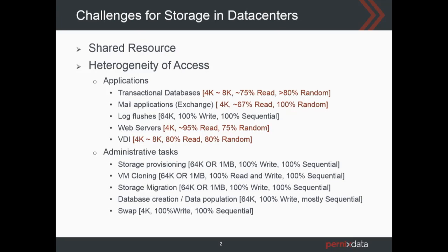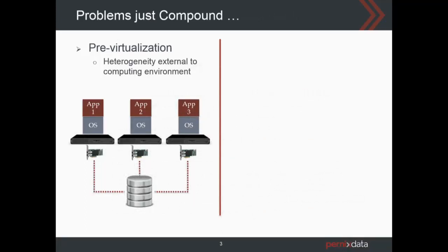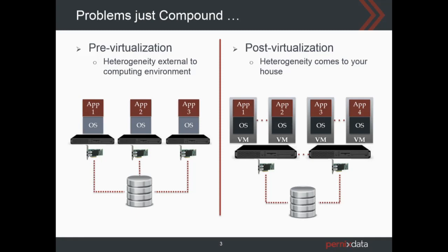There are also vSphere administrative tasks which tend to be mostly large block size, sequential, and write heavy. So when you have this kind of heterogeneity, it is very hard to satisfy the requirements for all of them. Before virtualization, you typically had multiple hosts each running a single application, all connected to shared storage. Within a host the application was predominantly single, issuing predominantly a single type of IO request. Shared storage saw the heterogeneity, but within the host it was not an issue.